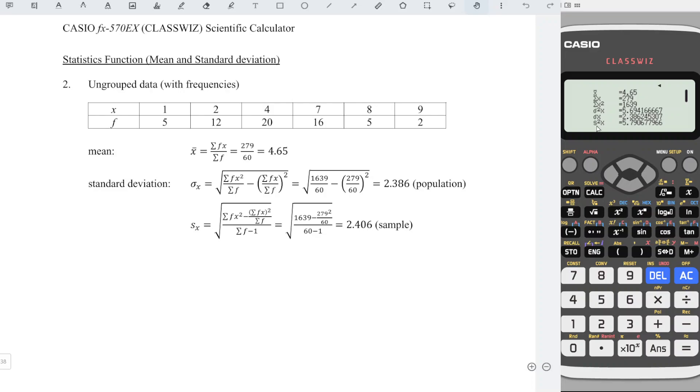And for sample variance, we have approximately 5.791. If we want sample standard deviation, then we just have to press down and look for sx, which is approximately 2.406. And we get that.